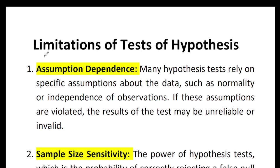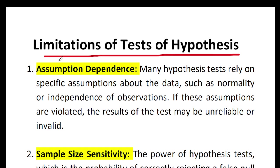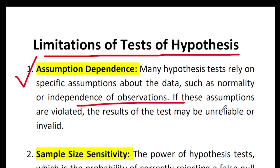Dear learners, welcome to the channel again. Today's topic is limitations of tests of hypothesis. The first limitation is assumption dependence. Many hypothesis tests rely on specific assumptions about the data, such as normality or independence of observations. If these assumptions are violated, the results of the test may be unreliable or invalid.